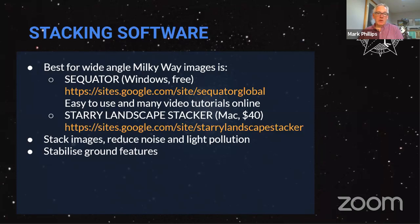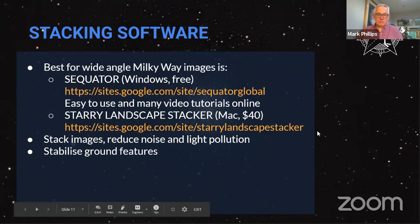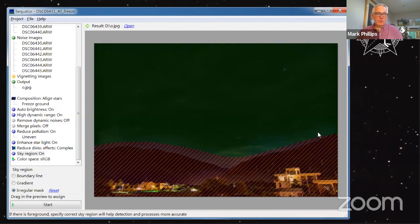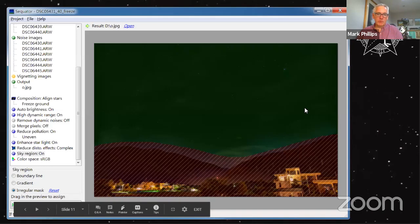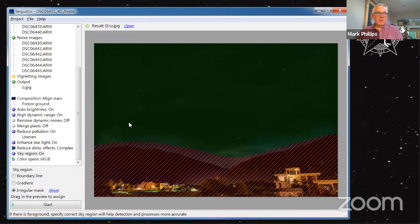For wide-angle driven imaging, Sequator is great if you've got a Windows PC, with lots of tutorials online. For Mac users there's Starry Landscape Stacker at $40 — apparently slightly better than Sequator but not much in it. Both stack images, reduce noise and light pollution, and can stabilize ground features in your shot. Sequator is really straightforward to use — you can paint a mask on the ground to stabilize it while processing the stars, with options for light pollution reduction and enhancing starlight.